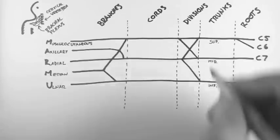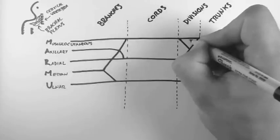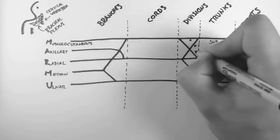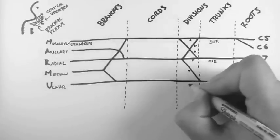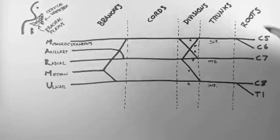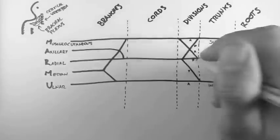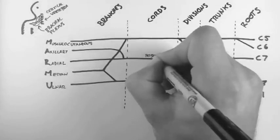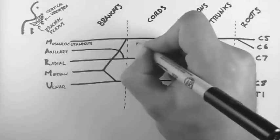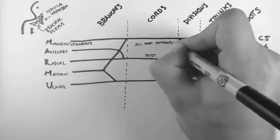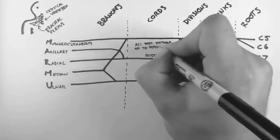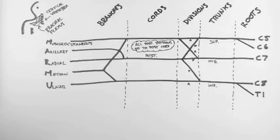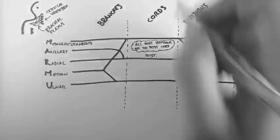So let's label the divisions. Here's an anterior division, then a posterior division, then an anterior division, then the posterior, then the posterior and then the anterior. Now the way to remember this is that this middle cord here is called the posterior cord and as a rule all posterior divisions go to the posterior cord and whatever's left over is the anterior division.